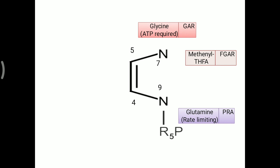Further, methanol-THFA adds one more carbon (formyl group) over the ring structure of purine, and that molecule is now called FGAR (formylglycinamide ribonucleotide), adding the 8th carbon over the purine ring.